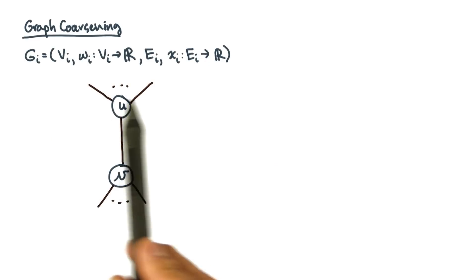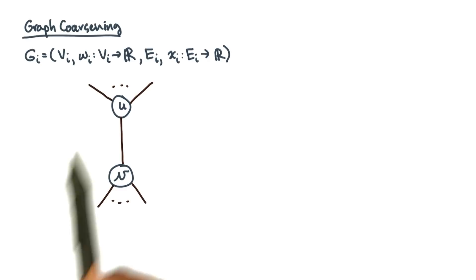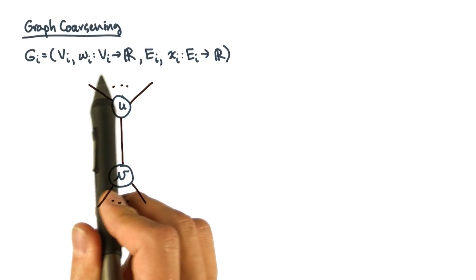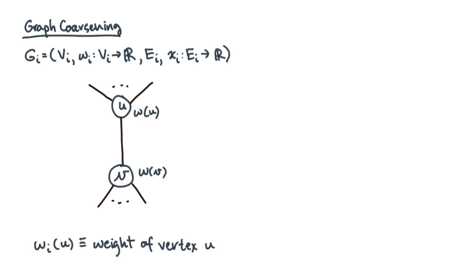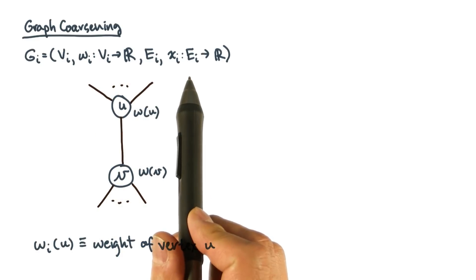Let's see how that might work. Consider two vertices in a weighted graph. Remember, even if the original graph is unweighted, we repeatedly coarsen by aggregating nodes and edges, and so we'll accumulate weights. In this example, wi is a function that maps every vertex to some weight. Similarly, the function xi will map edges to weights.